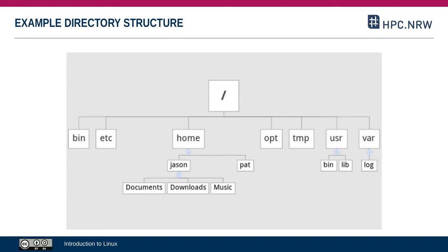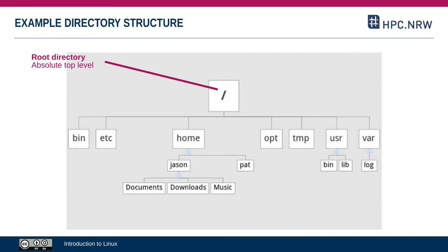The top level of the file tree is standardized — it's the same on every Linux system and usually looks like this. Let's go over the individual directories that make up the top level. At the very top is what's called the root directory, which is the absolute top level of the entire tree.